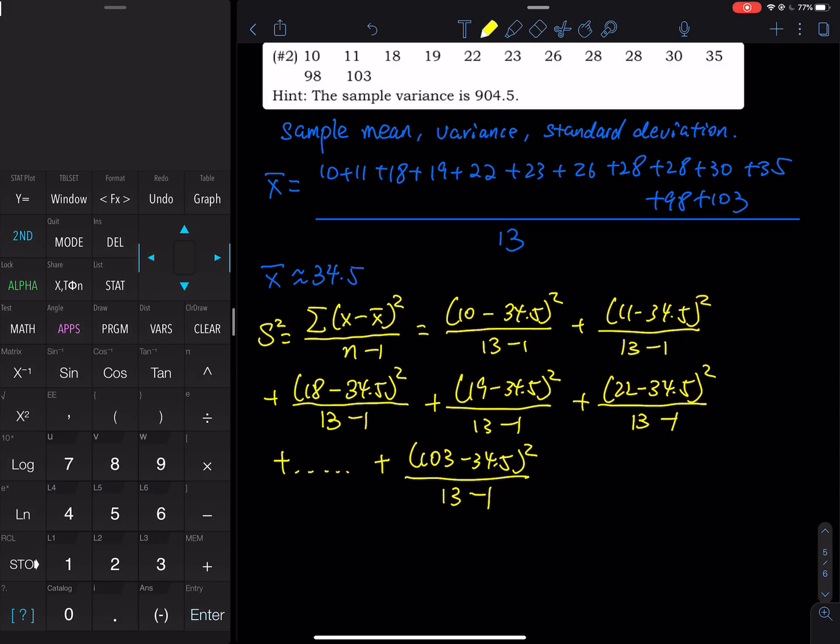But in this video, I will just go ahead and skip that. So S² is equal to, overall, approximately 904.5. And then the standard deviation, which is the square root of 904.5, is around 30.1.